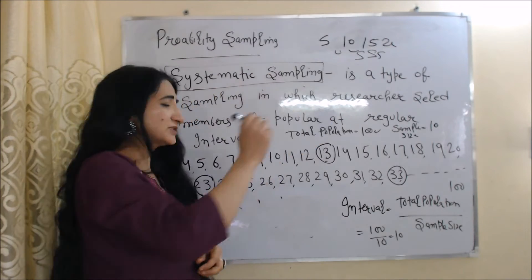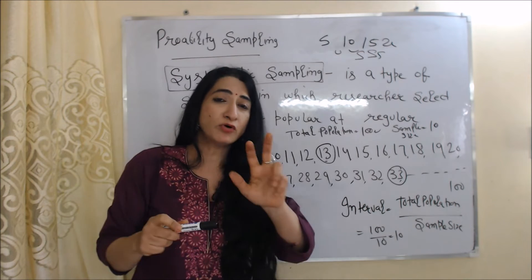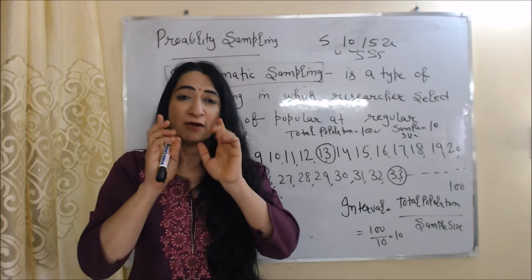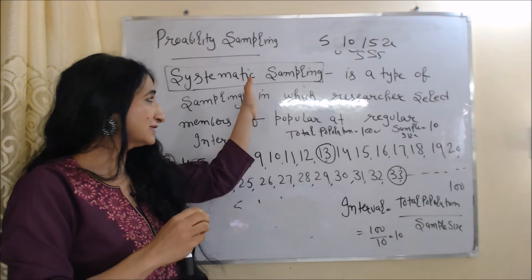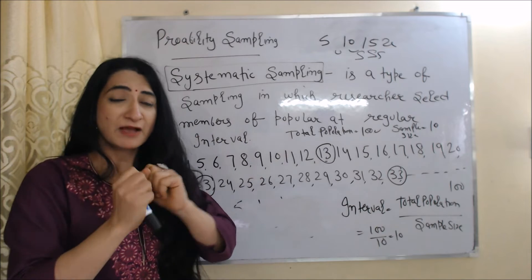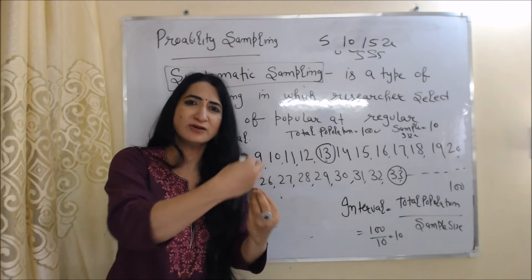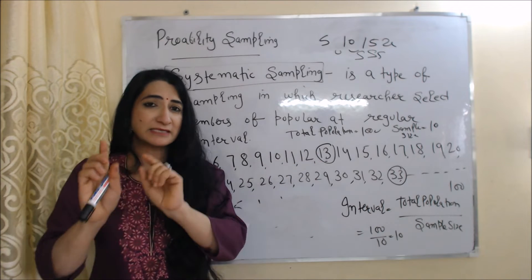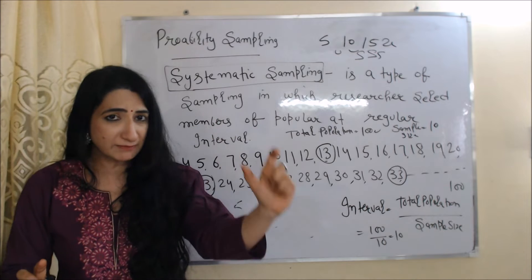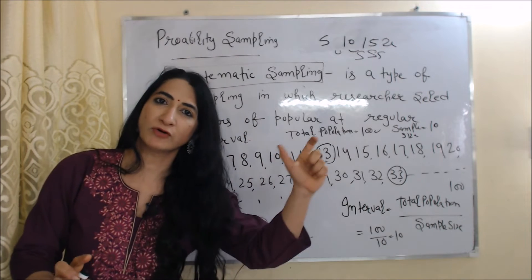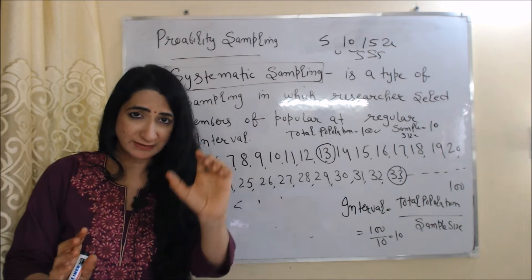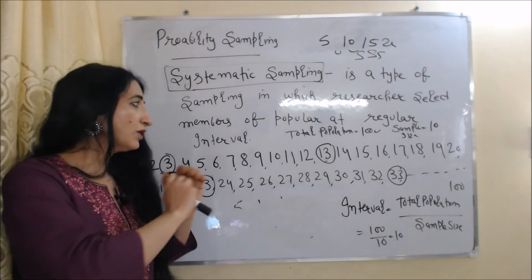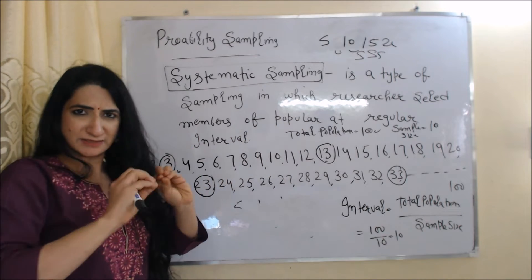Let us understand systematic sampling with an example. Two important things to keep in mind: first, we follow a proper system — as the name suggests, we arrange the population in ascending, descending, or alphabetical order. Second, the first sample is randomly selected; after that, we follow a regular interval.